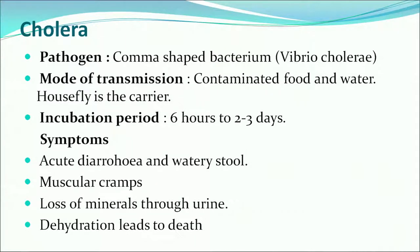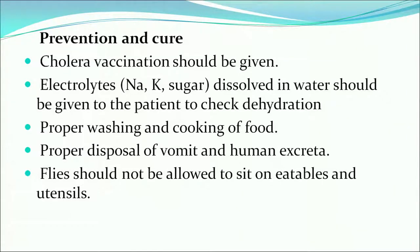The third bacterial disease is cholera, caused by the comma-shaped bacterium Vibrio cholerae. Mode of transmission is contaminated food and water, with the housefly as a vital carrier. Incubation period varies from 6 hours to 2 to 3 days. Symptoms include acute diarrhea and watery stool, muscular cramps, and loss of minerals through urine — dehydration can lead to death. Prevention includes cholera vaccination, checking dehydration, proper washing and cooking of food, and proper disposal of vomit and human excreta.